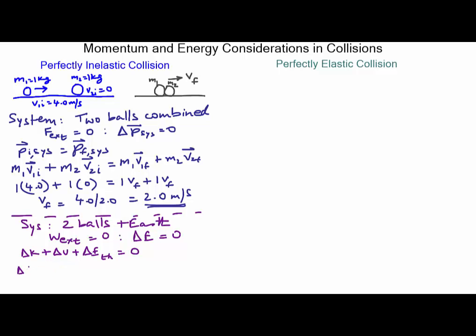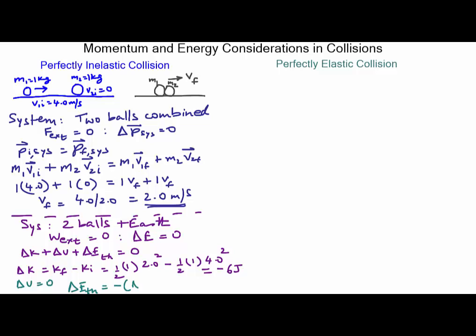Let's see what delta K is. Delta K is KF minus KI, which is one-half times 1 times VF squared — that's 2 squared — minus KI, which is one-half times 1 times the initial velocity of 4 squared. This gives a value of minus 6 joules. Delta U is simply zero — there is no change in height. Going back to the equation, delta E_th equals negative delta K plus delta U, giving minus of minus 6 joules plus 0, which is 6 joules.